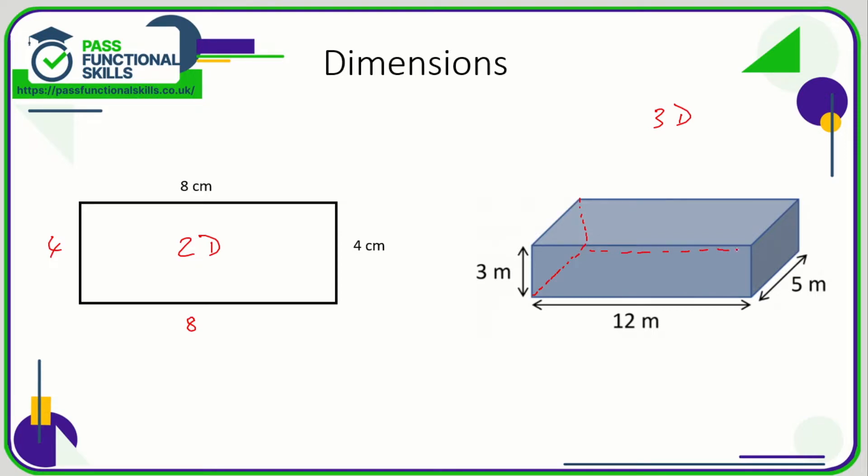It's a 3D shape because it has three dimensions: it has length, it has width, and it also has height. And from these three dimensions on a cuboid we can work out the volume by multiplying them together.